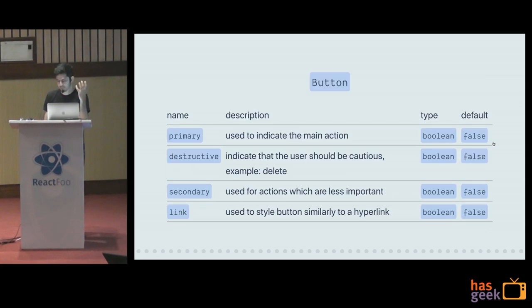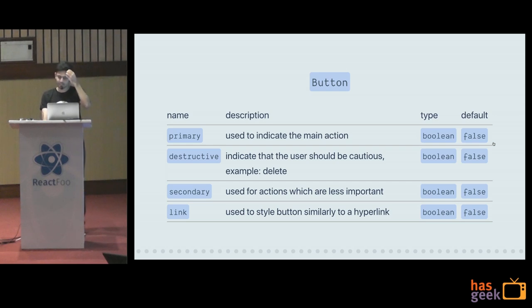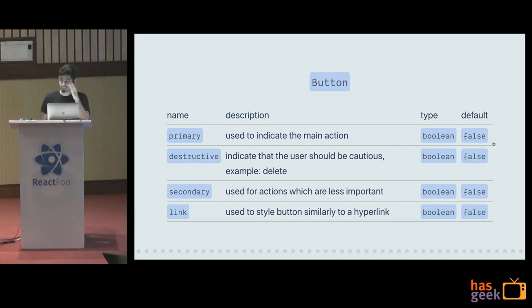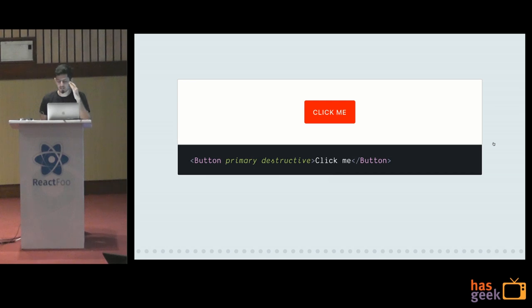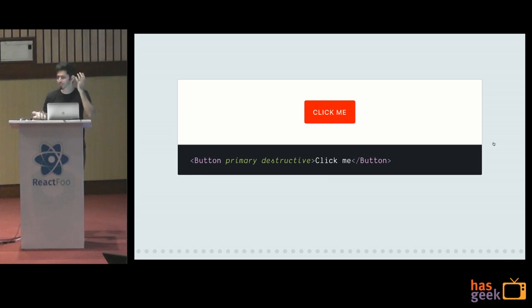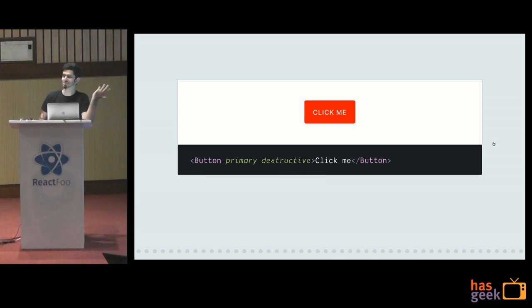If you take out the prop table for this, you have primary, destructive, and then a bunch more — secondary, link. In the Cosmos design system I was building, we had like six variants of buttons. And then someone asked: what would happen if I did primary AND destructive? Which one wins, or do they merge? My first response was: why would anyone do that? If you do something stupid, something stupid should happen — you don't know which one will win.